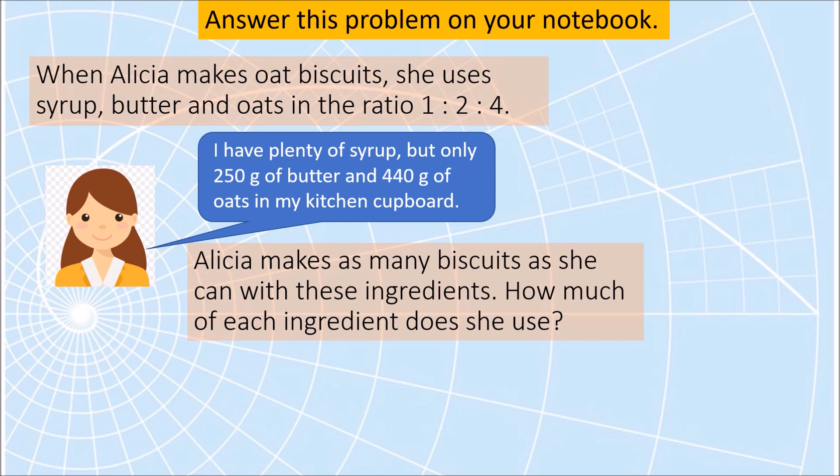Try to solve this problem on your notebook, pause this video and come back when you are done to check your work. Let's check your work. When Alicia makes oat biscuits she uses syrup, butter and oats in the ratio 1 is to 2 is to 4. She has plenty of syrup but only 250 grams of butter and 440 grams of oats.